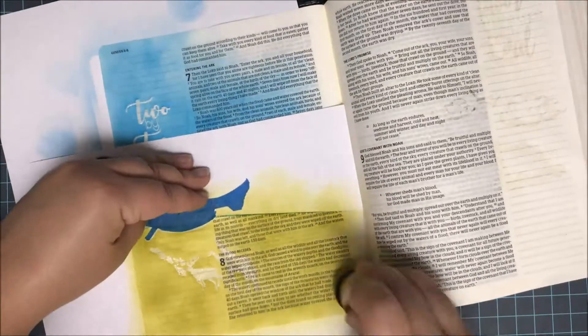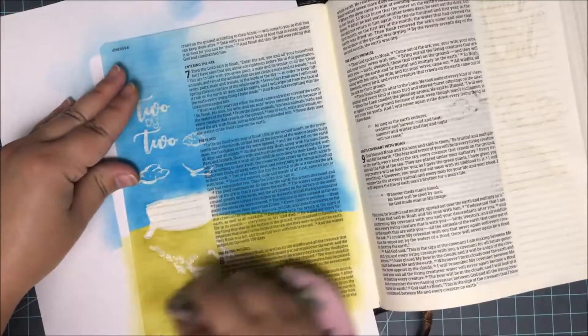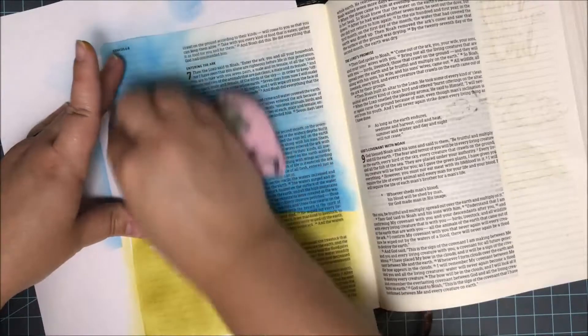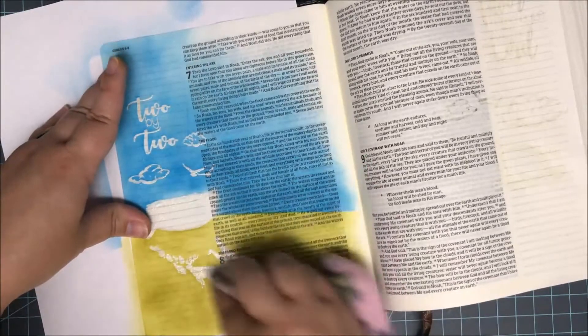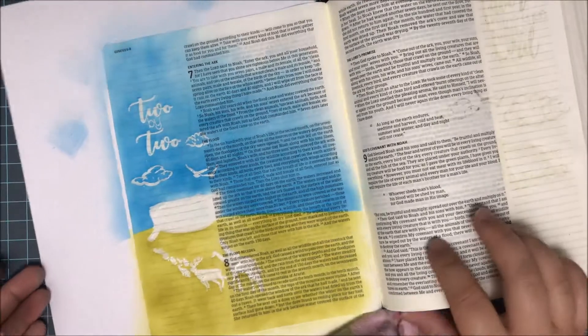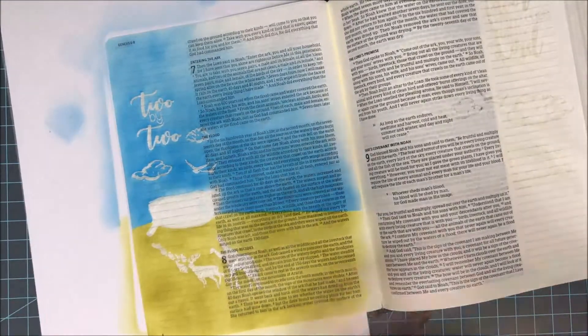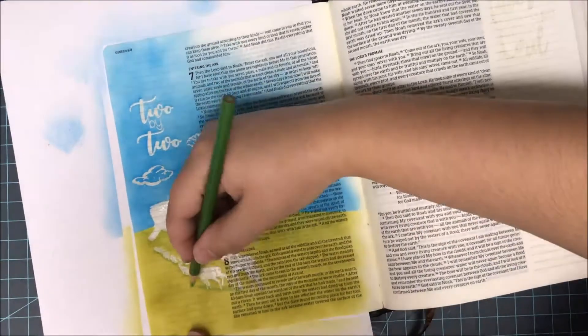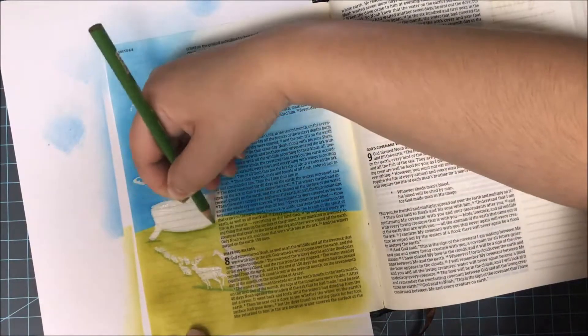So what I like to do is take just a dry cloth. This is a baby washcloth. My daughter doesn't use them anymore, so I've got a bunch that I can use to clean my stamps now, and I just wipe away that ink that has gathered up on top of that embossing, and it really brings it back to life.